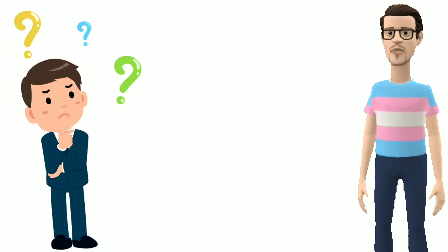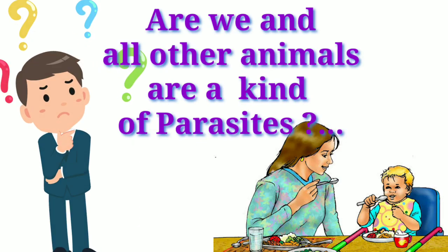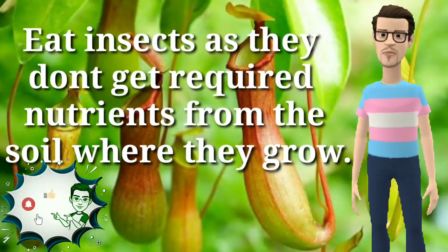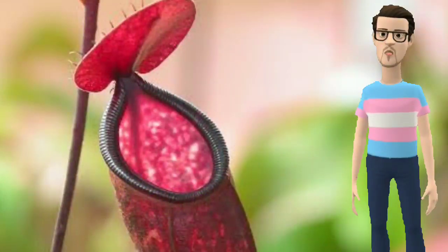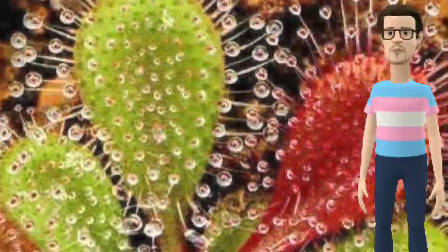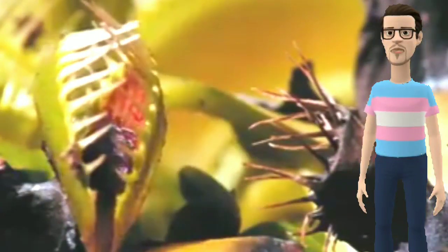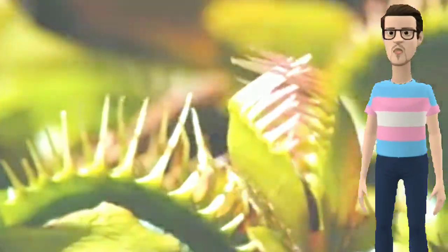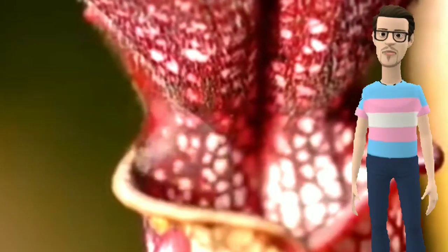One more question: are human beings and animals a kind of parasites? Just think. Next, here you can see plants that eat insects because they don't get required nutrients from the soil where they grow — these are called insectivorous plants. Examples are the pitcher plant, the dew plant, and the snap trap. You can see in the video how the snap trap and pitcher plant trap insects for their required nutrients.